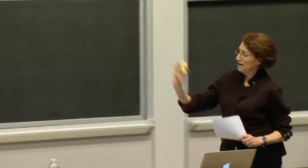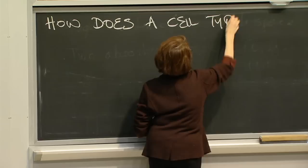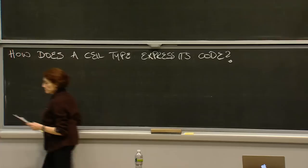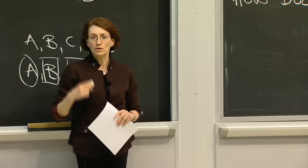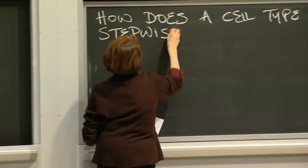Now we have a framework for thinking about what a cell type is. The question is: how does that combinatorial code get expressed in each cell type? The global answer is: stepwise.